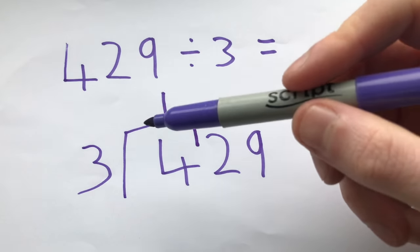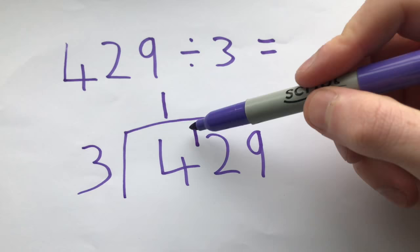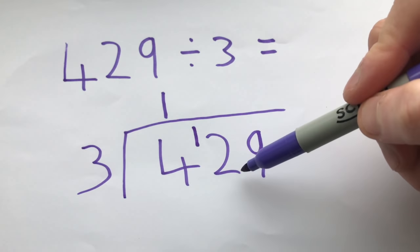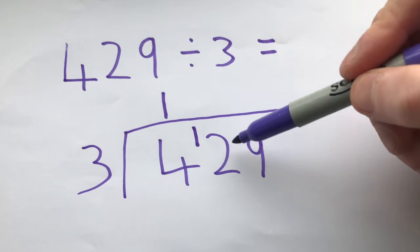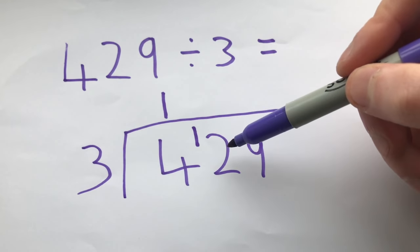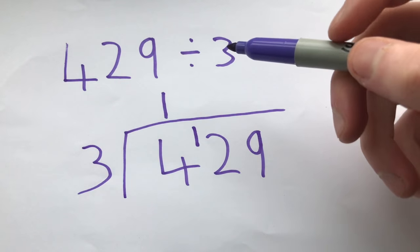The reason we do this is so we can then go, how many threes go into this number that we've just created, which is 12. So that one that we carried goes there and it goes in front to make a new number, 12. How many threes go into 12? If you know your three times table,